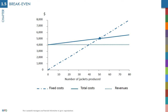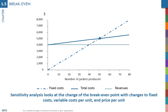Once the breakeven point has been determined, the debate shifts to assessing how difficult reaching this point is. One way is comparing this target with the production capacity of the business or the size of the market. If the breakeven occurs at or near the capacity, or if a large market share needs to be captured, then the strategy is called into question.